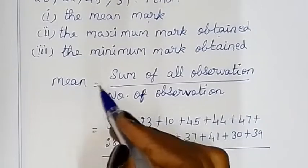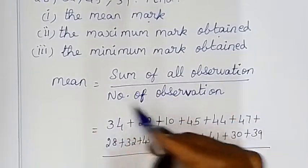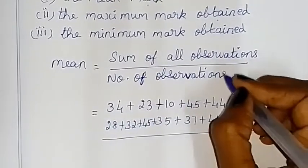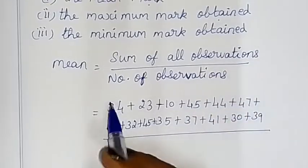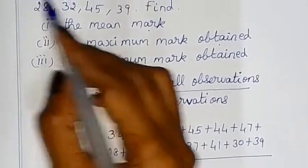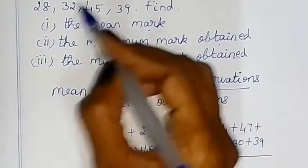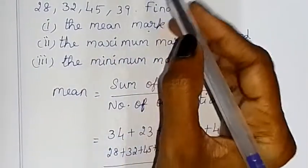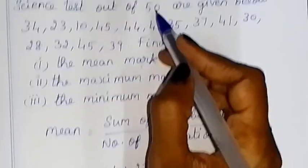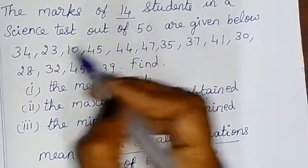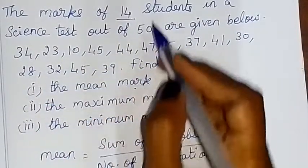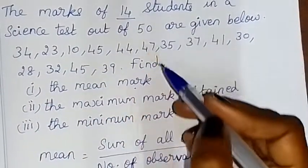First, we find the mean. Mean is equal to sum of all observations divided by number of observations. We add all the observation values. The number of observations here is 14 students, so we divide by 14.